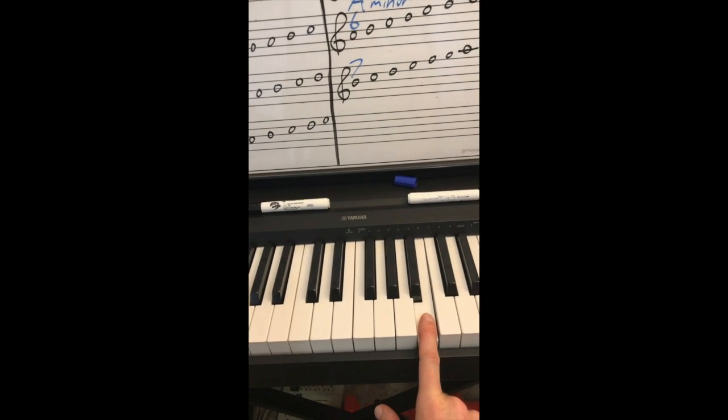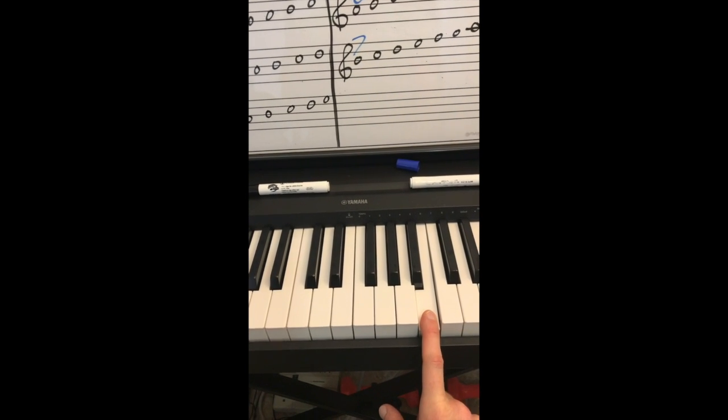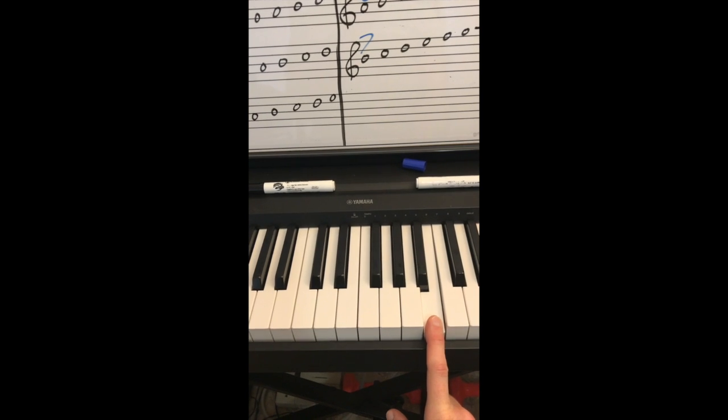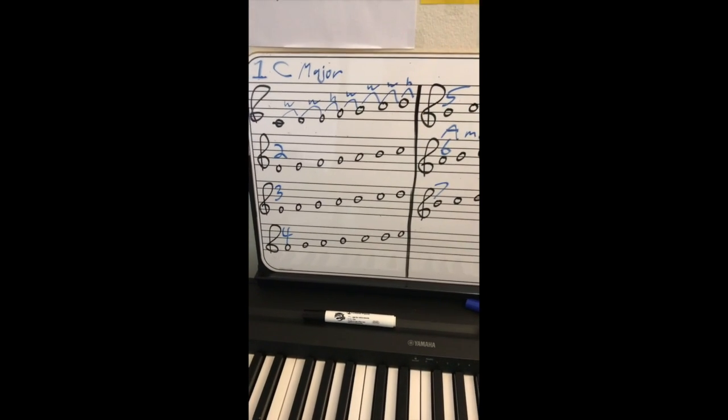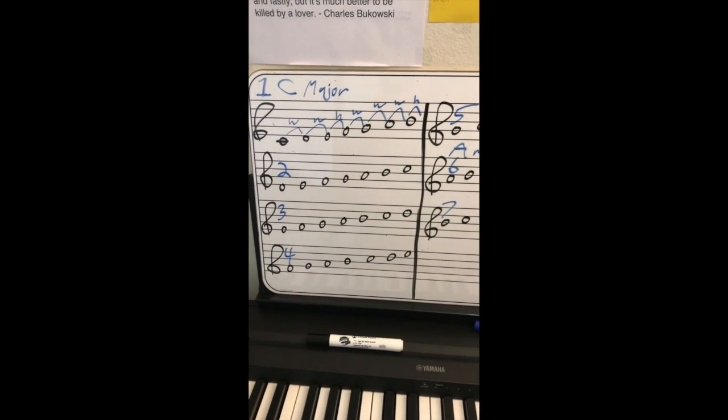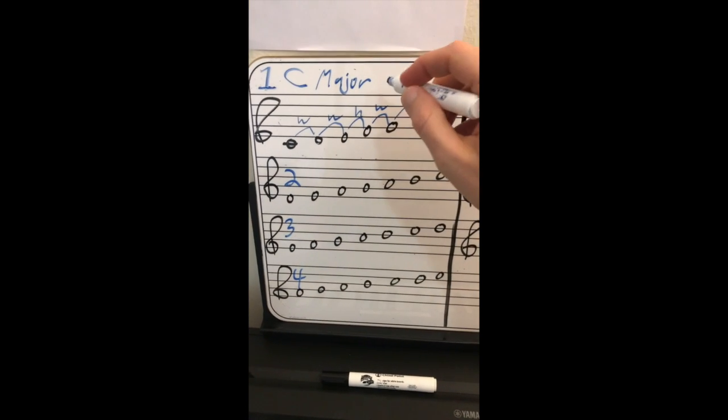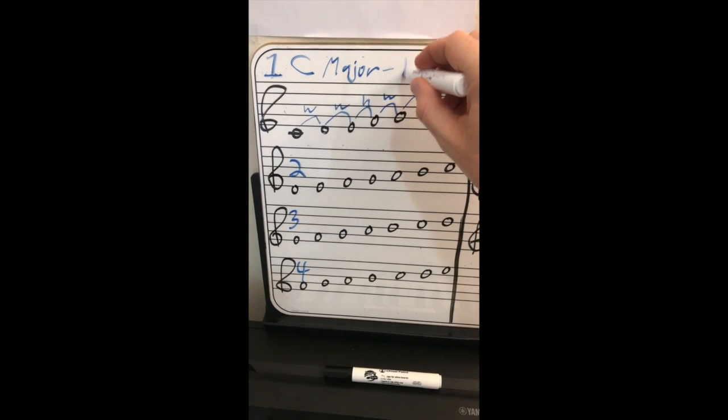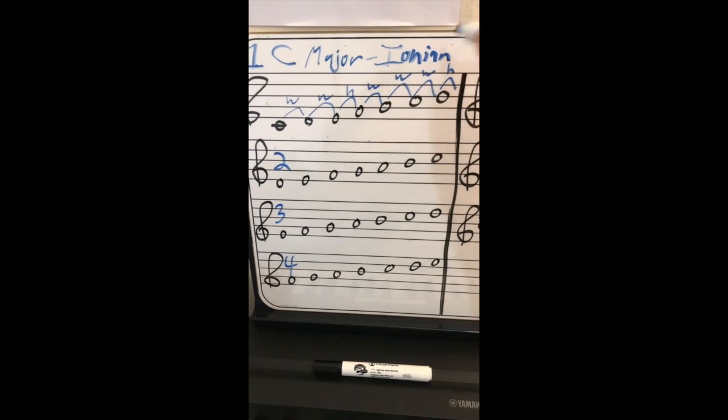My fingering was a little off there. So any of these 12 notes can be used to build a major scale, which can then have seven modes, 12 times 7. There's 84 possible modes. Think of the possibilities. Every mode has a unique name. The proper modal name for major is Ionian.